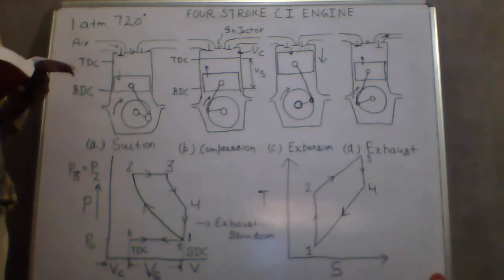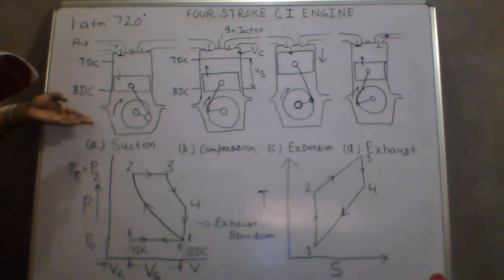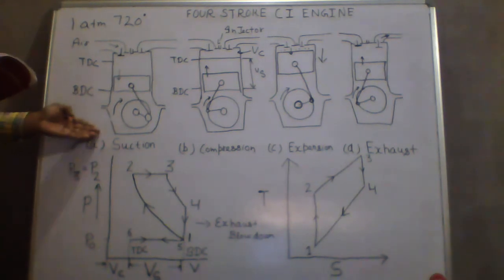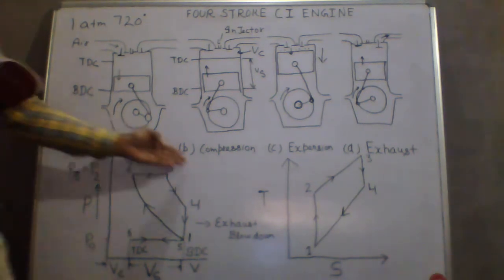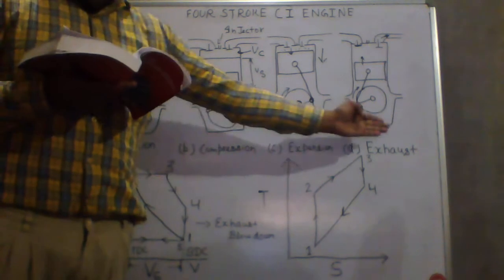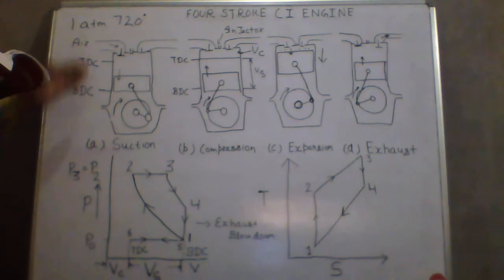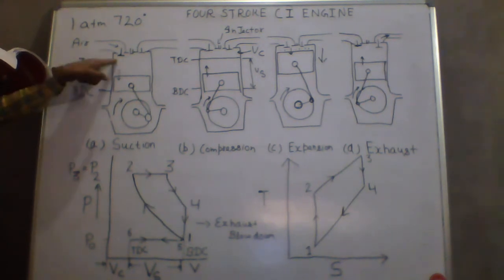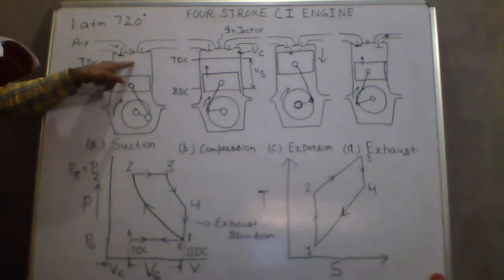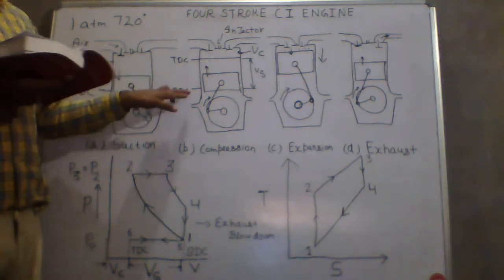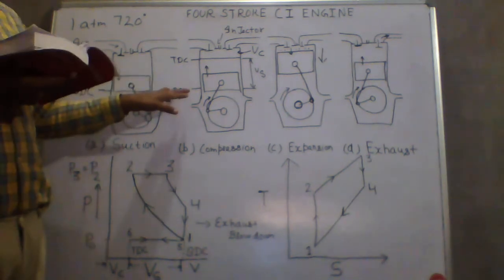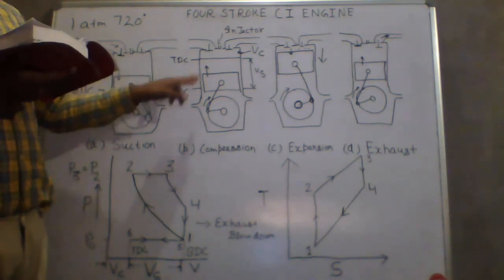The ignition system is not required in the CI engine as it is in the SI engine. The strokes are the same as in the SI engine: suction stroke, compression stroke, expansion stroke, and exhaust stroke. During the suction stroke, air alone is induced; the inlet valve is open and the exhaust valve is closed.